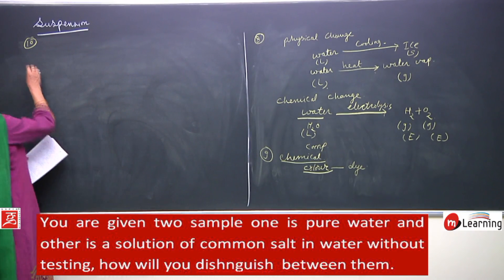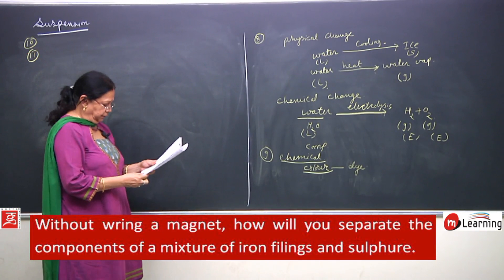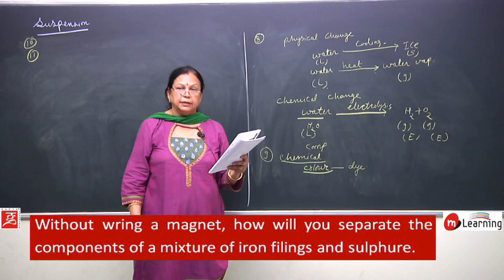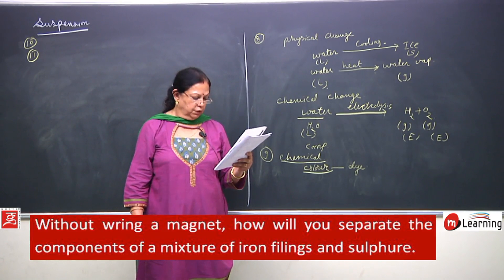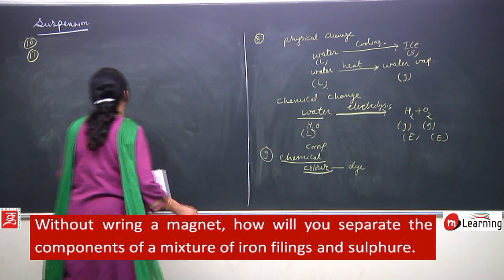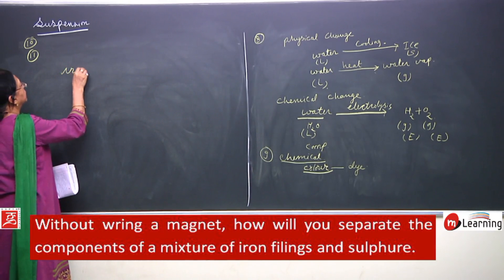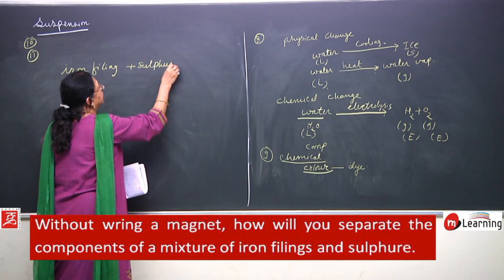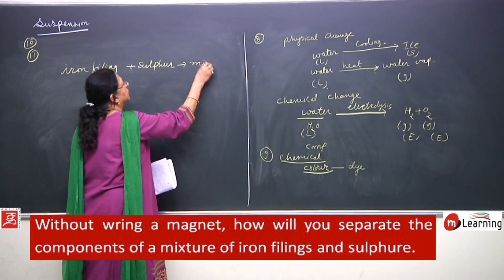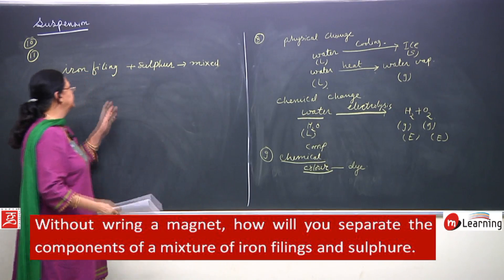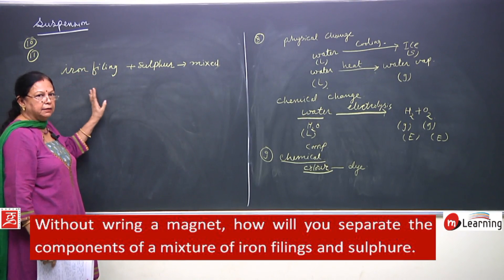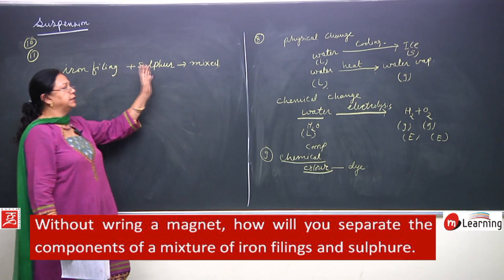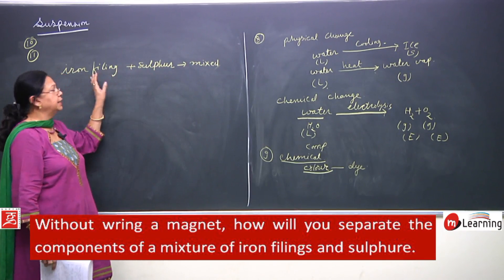Next question: without using a magnet, how will you separate the components of a mixture of iron filings and sulphur? You have iron filings and sulphur mixed together. Using a magnet would easily separate them since iron is attracted to magnets — but I am not allowing you to use a magnet.